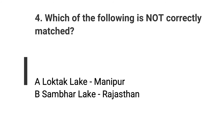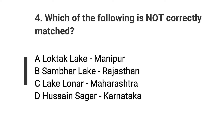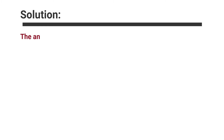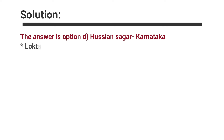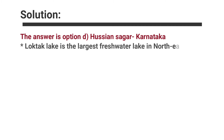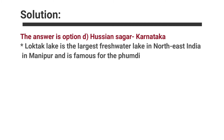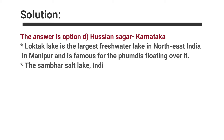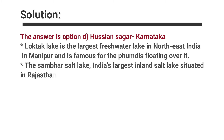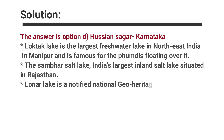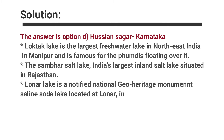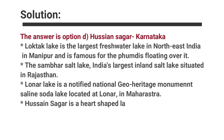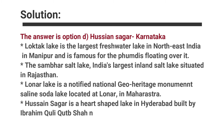Question number four: Which of the following is not correctly matched? Options are A. Loktak Lake, Manipur; B. Sambhar Lake, Rajasthan; C. Lake Lonar, Maharashtra; D. Hussain Sagar, Karnataka. The answer is option D, Hussain Sagar, Karnataka. Loktak Lake is the largest freshwater lake in northeast India, located near Moirang in Manipur. Sambhar Lake, India's largest inland salt lake, is located 96 km southwest of Jaipur in Rajasthan. Lonar Lake is a notified National Geo-Heritage Monument saline soda lake in Buldhana district, Maharashtra. Hussain Sagar is a heart-shaped lake in Hyderabad, built by Ibrahim Quli Qutb Shah — it is located in Hyderabad, Telangana, not Karnataka.